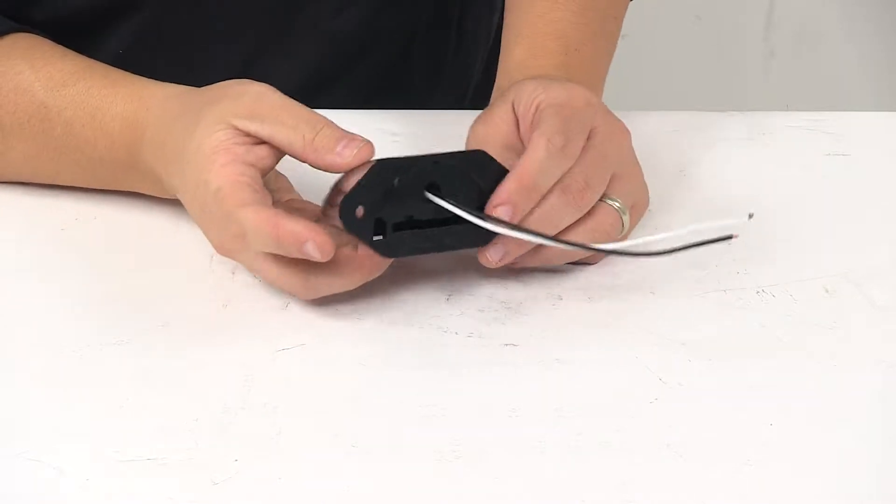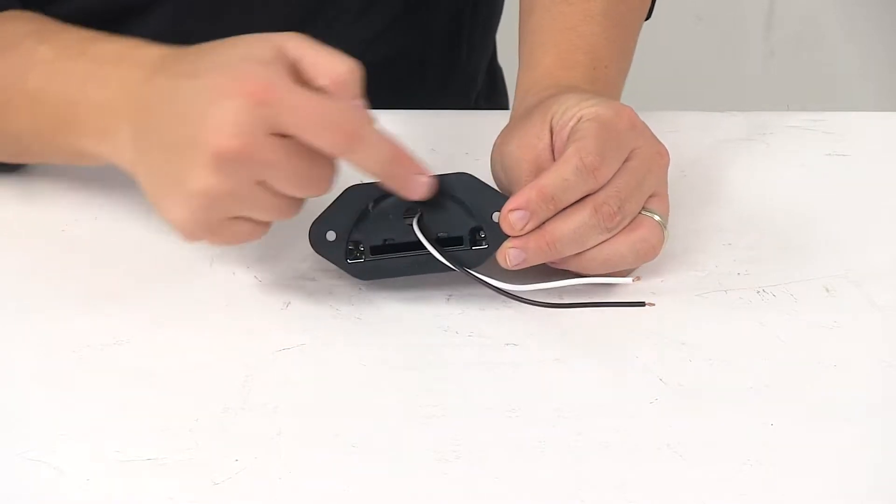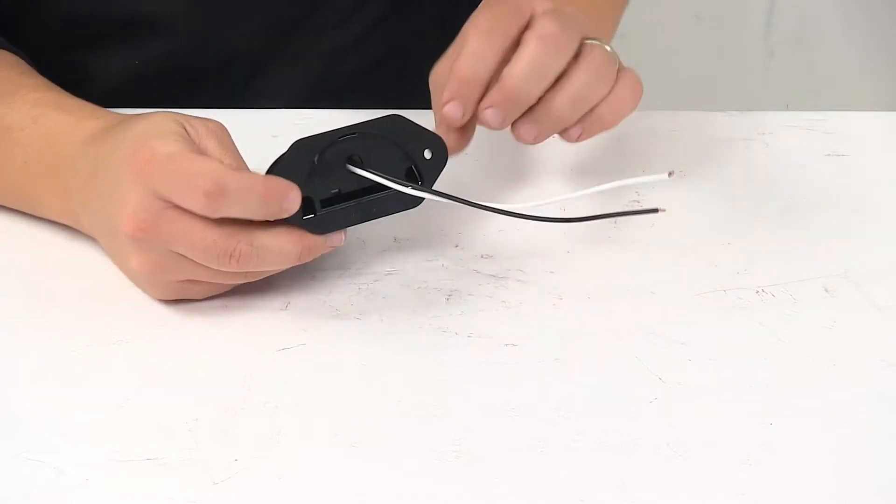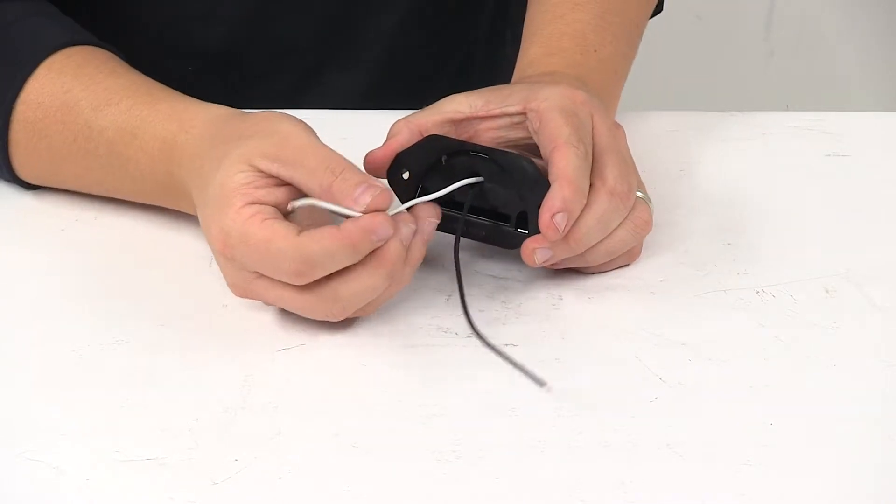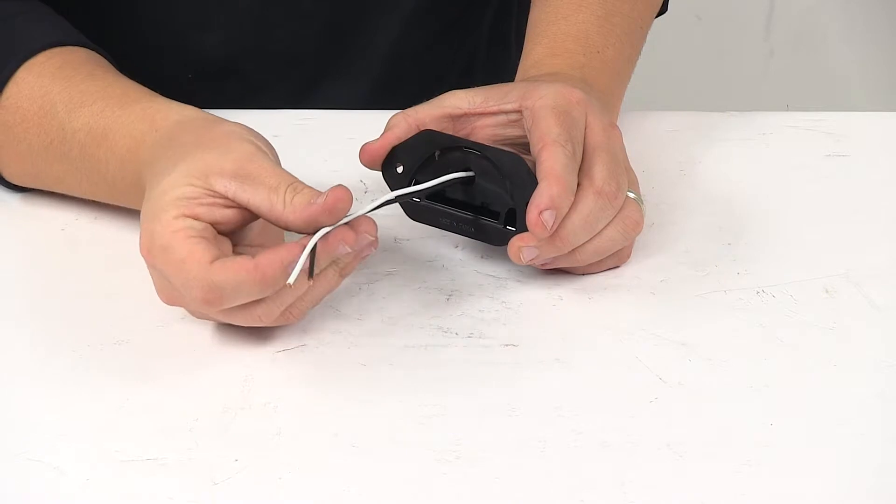It mounts directly on the surface of the trailer. Mounting hardware not included. Two mount hole design. And it's a two-wire design, so we have the white wire, which is our ground wire. Black wire is the power wire.